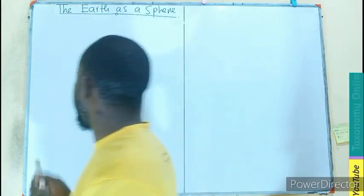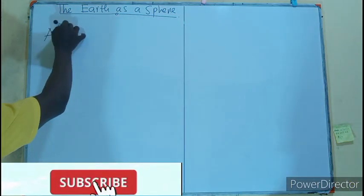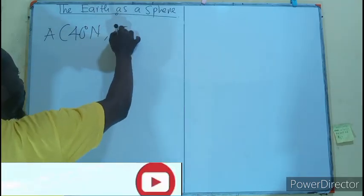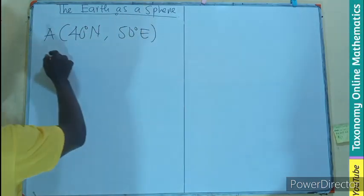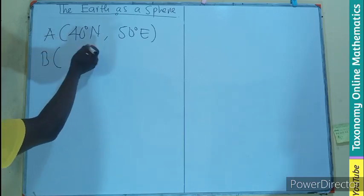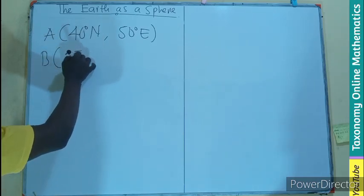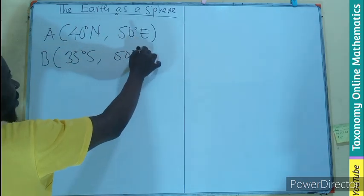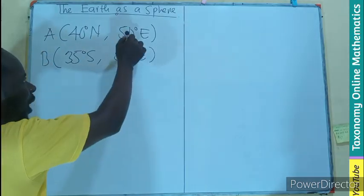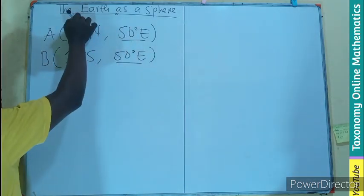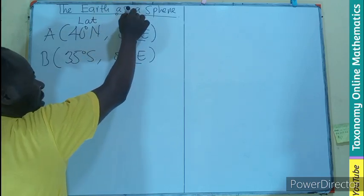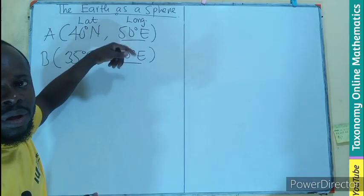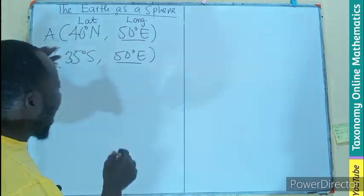If point A is at 40 degrees north and 50 degrees east, and point B is at 35 degrees south and 50 degrees east, we are dealing with the same longitude. The first angle is the latitude and the second angle is the longitude. Since they share the same longitude, we are going to have a great circle.